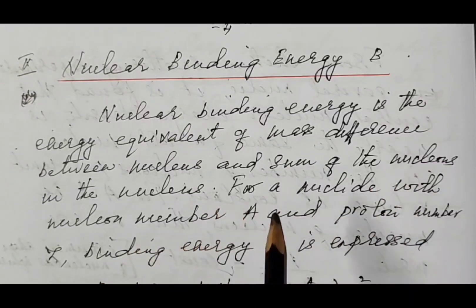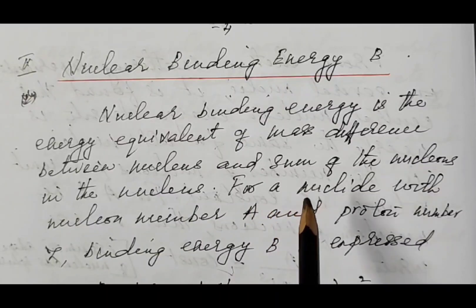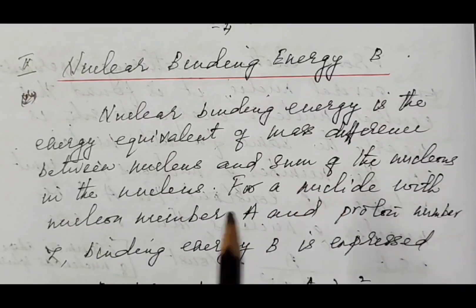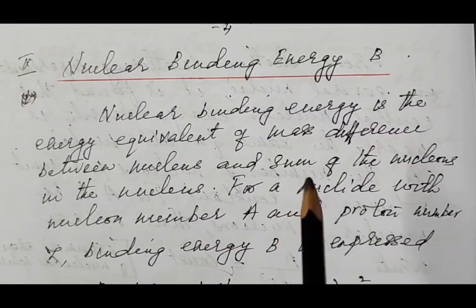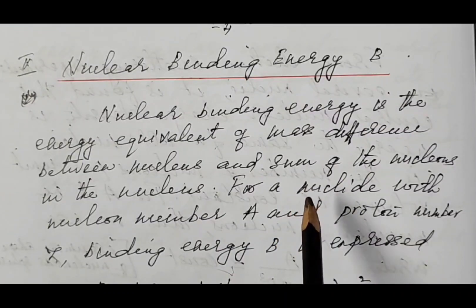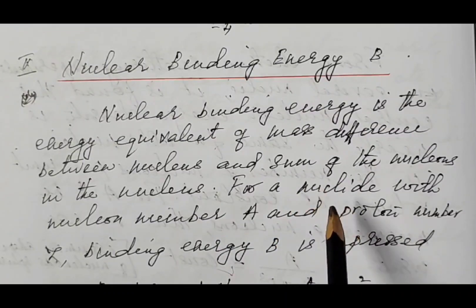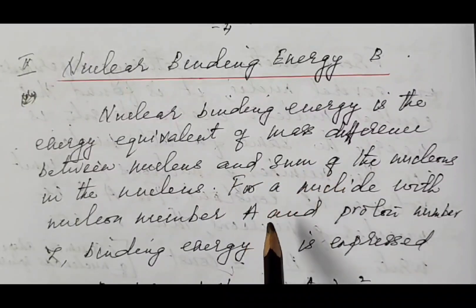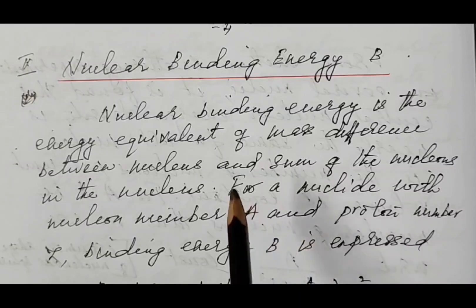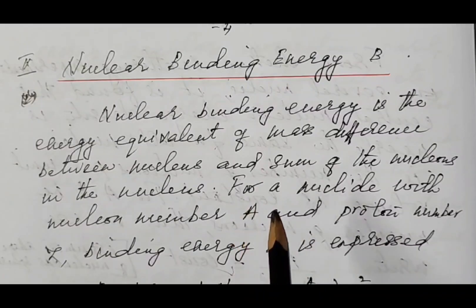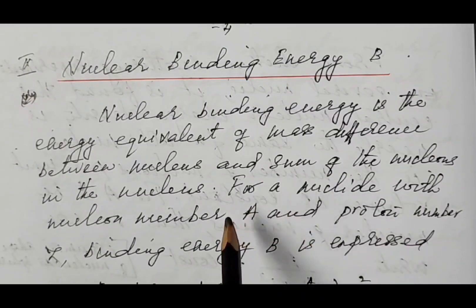This energy equivalent — the energy equivalent of the mass difference — actually maintains the stability of the nucleus. That is why we define binding energy that way. We can calculate the binding energy of the nucleus from this definition.